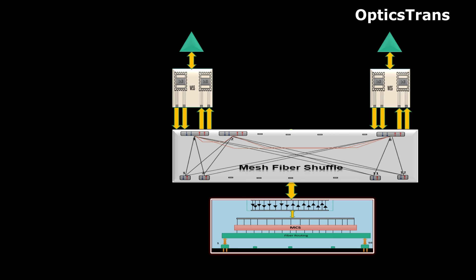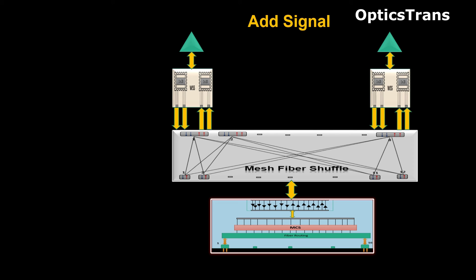Now, let's look at add, drop, and pass through scenarios. For illustration purpose, we'll send red light in this diagram. In the add direction, transponder is connected with MCS card, and MCS directs signals from add drop ports to particular degree bound port. The array in the add direction amplifies the signal. Then fiber shuffle directs the signal to particular degree WSS add ports. WSS selects signal from the add ports and signal is amplified by the amplifier and transmitted.